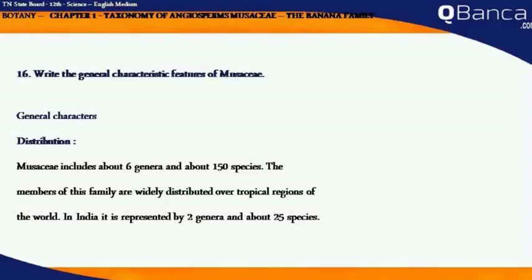General Characteristics of Musaceae. Distribution: Musaceae includes about 6 genera and about 150 species. The members of this family are widely distributed over tropical regions of the world. In India, it is represented by 2 genera and about 25 species.